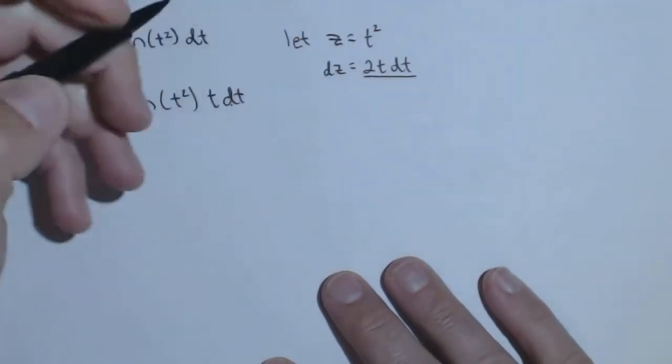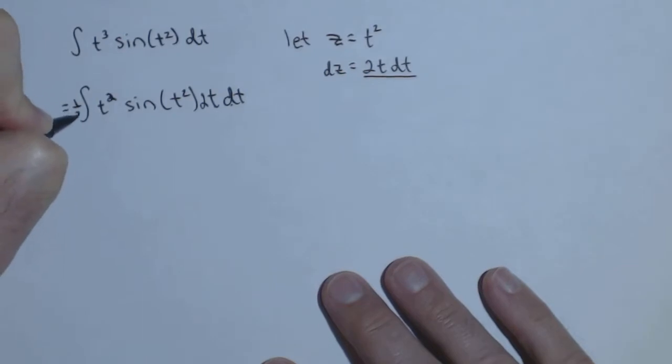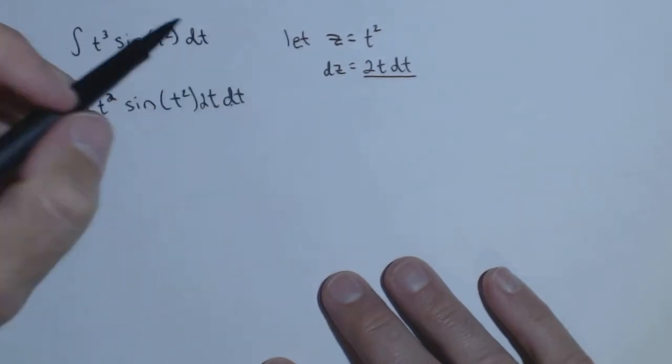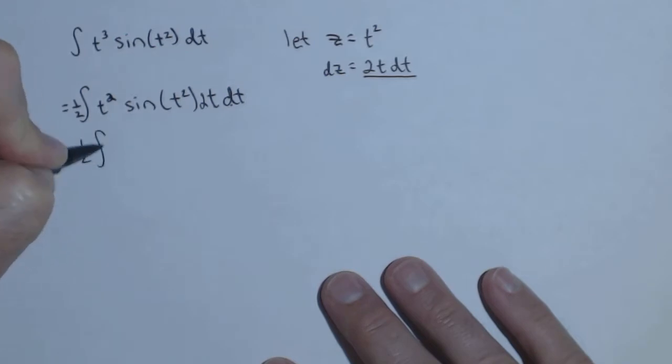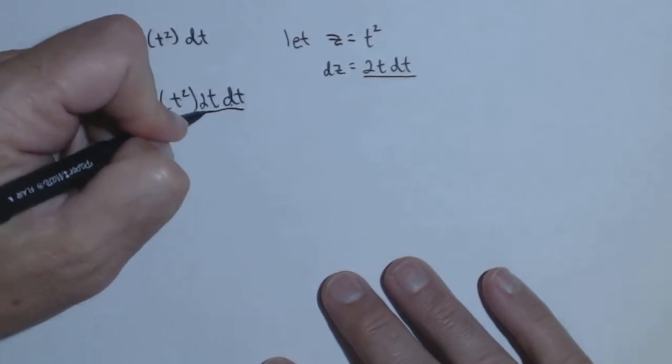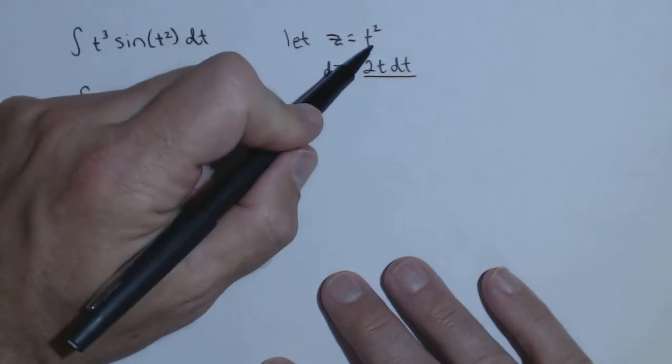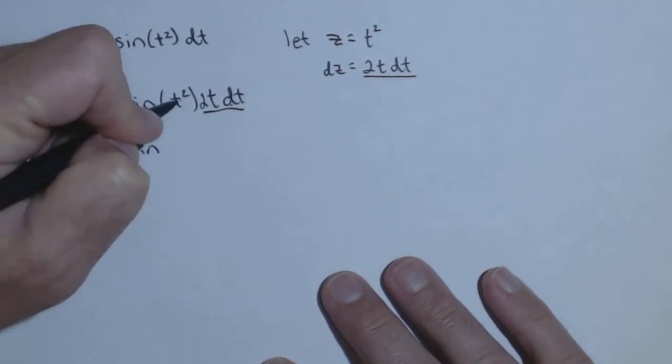I like to add the 2 there and balance it out with the 1 half out front. I know some people like solving for the dt, and that works just as well. Now I can make my substitution, because notice I've got t squareds everywhere, and this is just dz, and z is equal to t squared. So this t squared becomes a z, and so does this one.